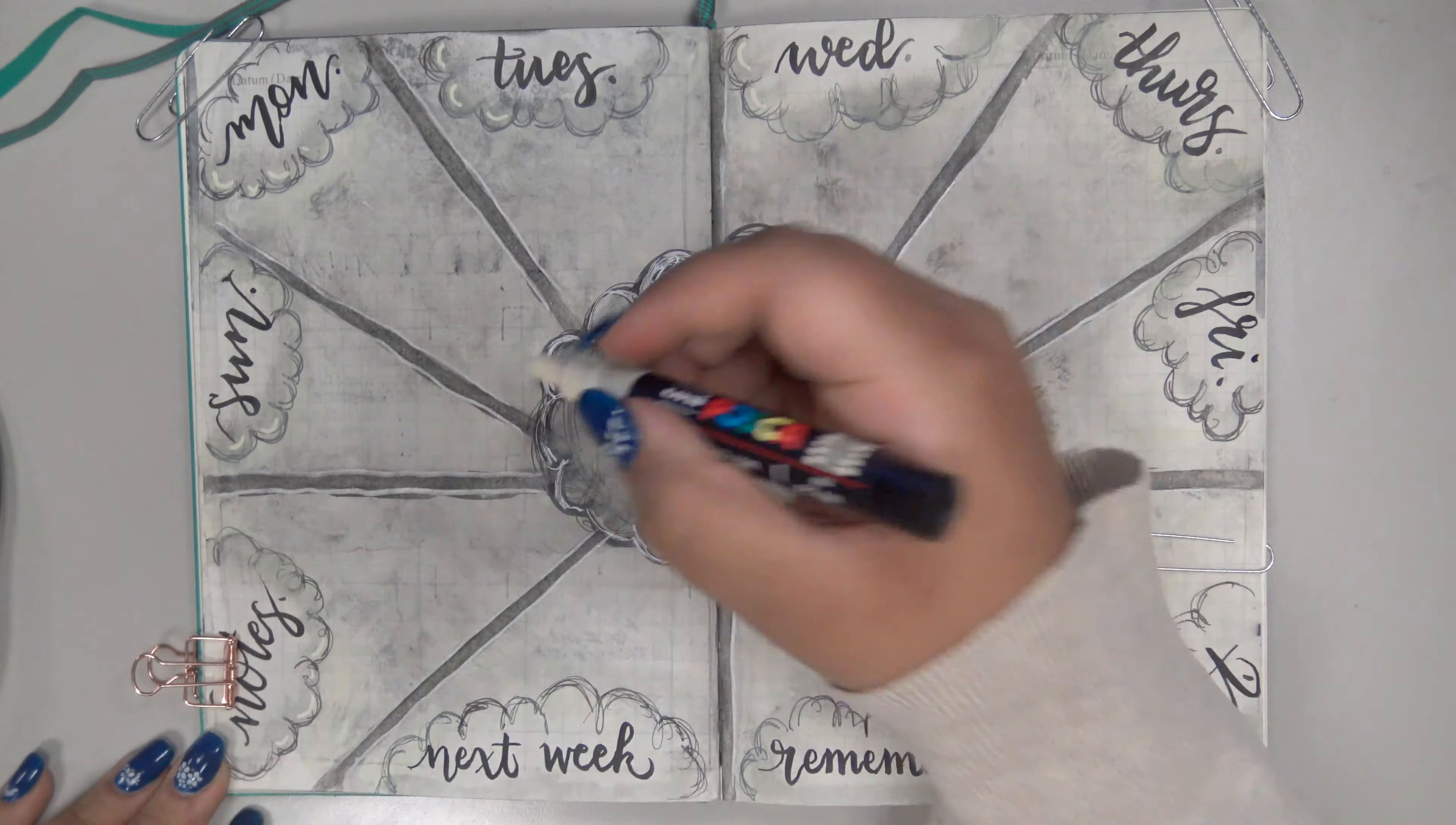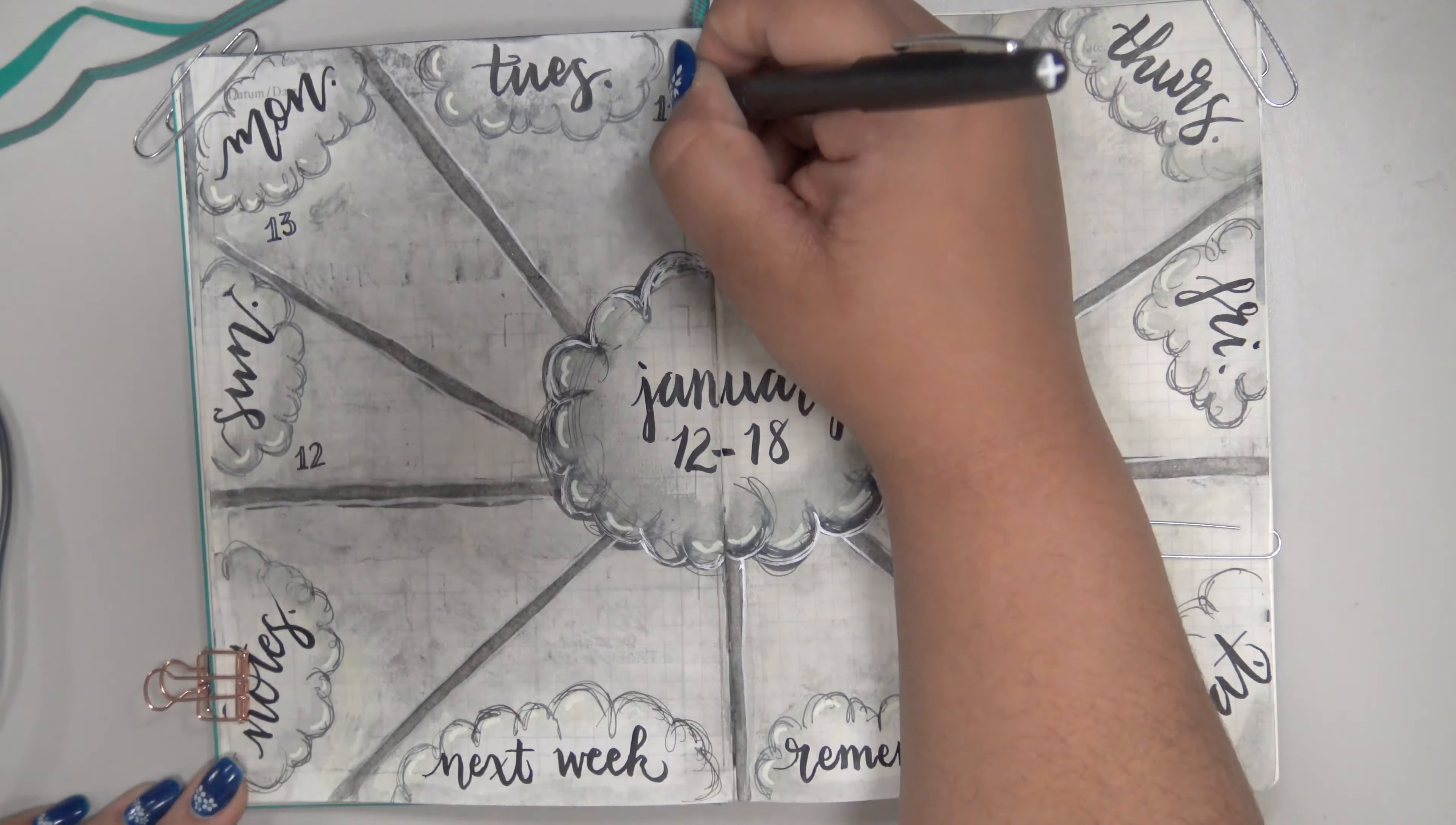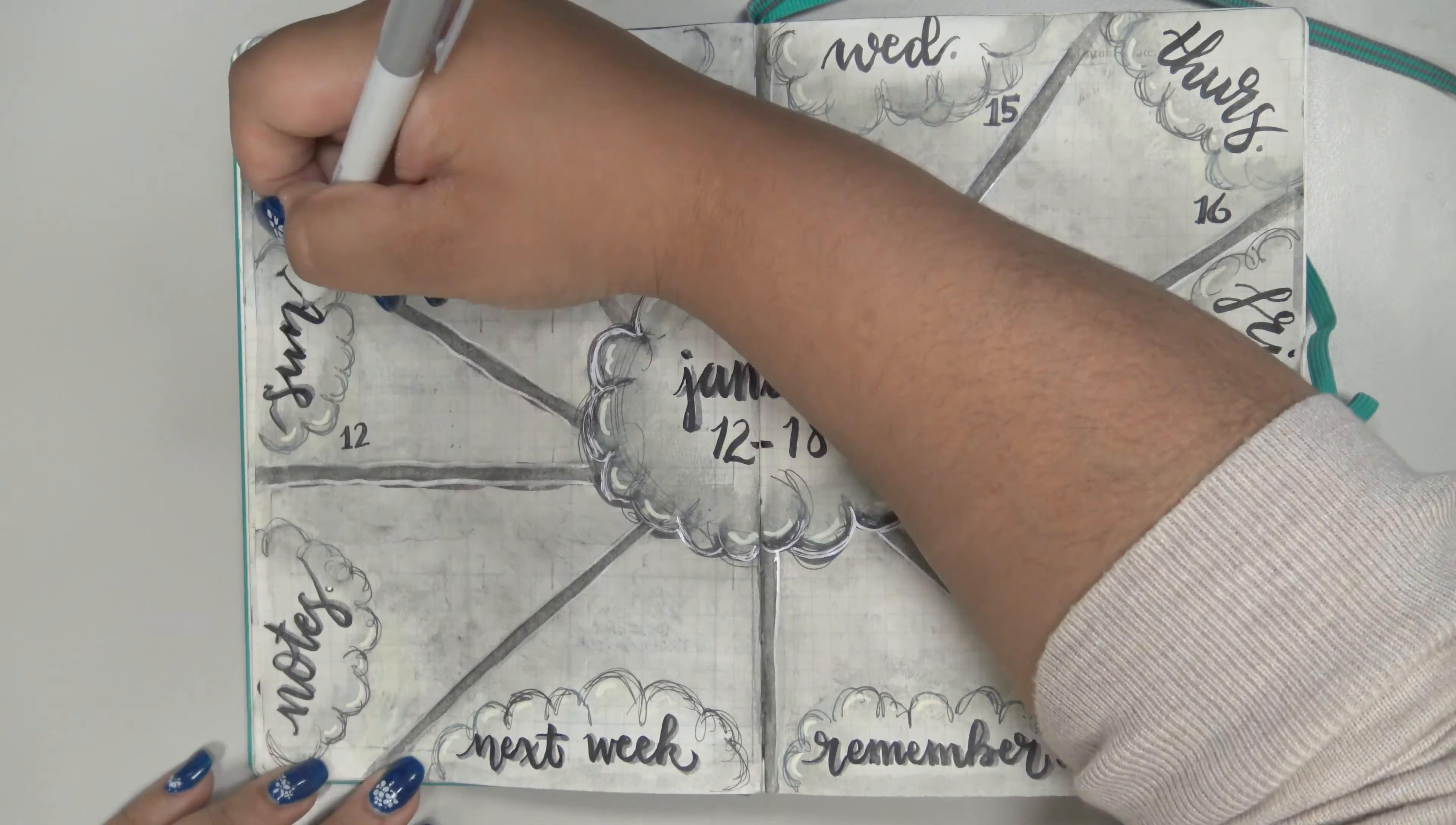Then I went back and added some highlights with the ivory paint marker once the ink was dry. Then it was just a matter of adding numbers to the days of the week, a few embellishments with my silver gel pen, and the quote. This one reads: there's a bright spot in every dark cloud.